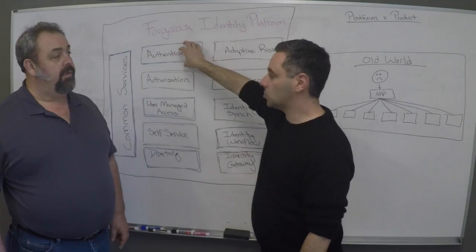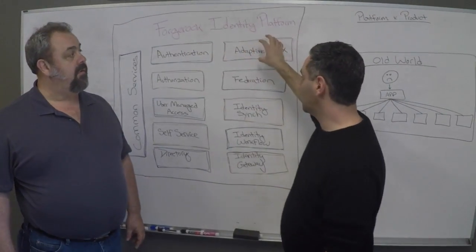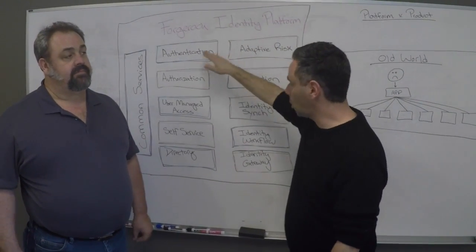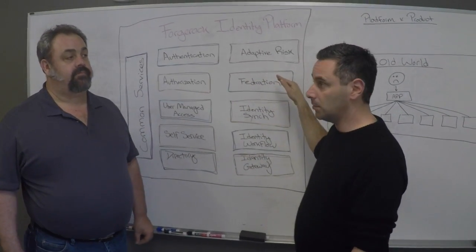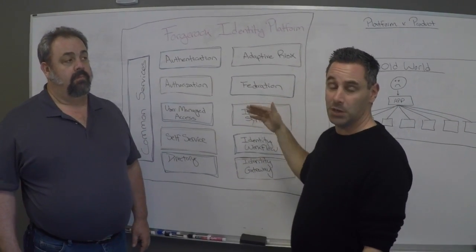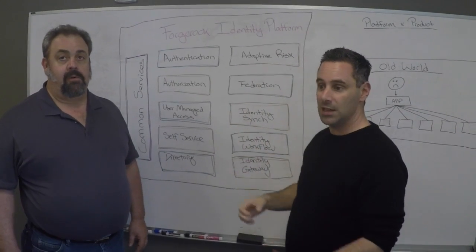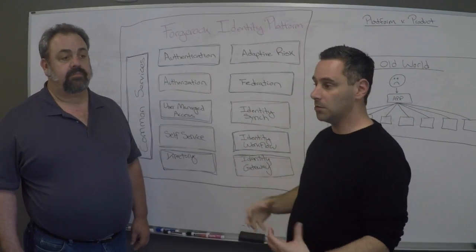You can actually start with an authentication problem or adaptive risk. There are all kinds of entry points—all of these are modules, essentially ten modules that you can buy and use as an entry point. When you want to move to the next service, it's not a whole thing around deploying lots of new infrastructure.